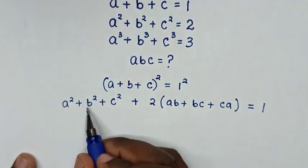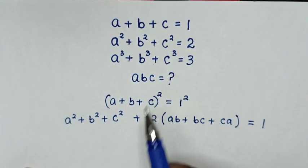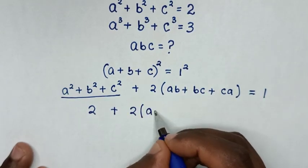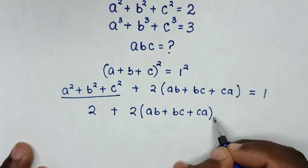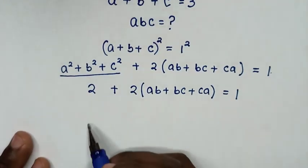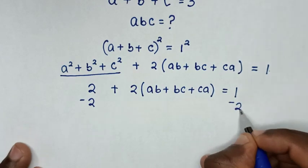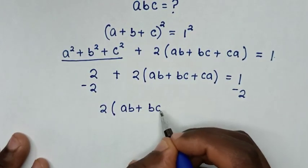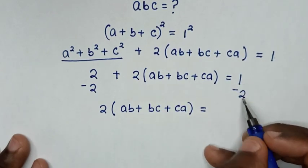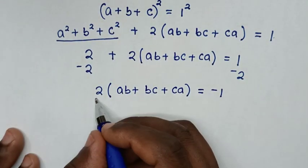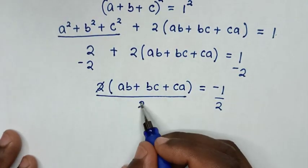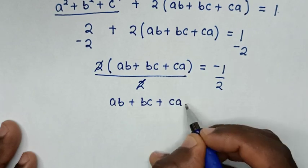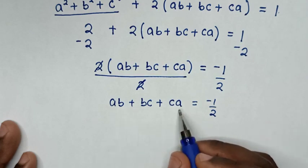From the second equation, a squared plus b squared plus c squared equals 2. Substituting that value: 2 plus 2(ab plus bc plus ca) equals 1. Taking 2 to the right side, 2(ab plus bc plus ca) equals 1 minus 2, which is negative 1. Dividing both sides by 2, ab plus bc plus ca equals negative one-half.